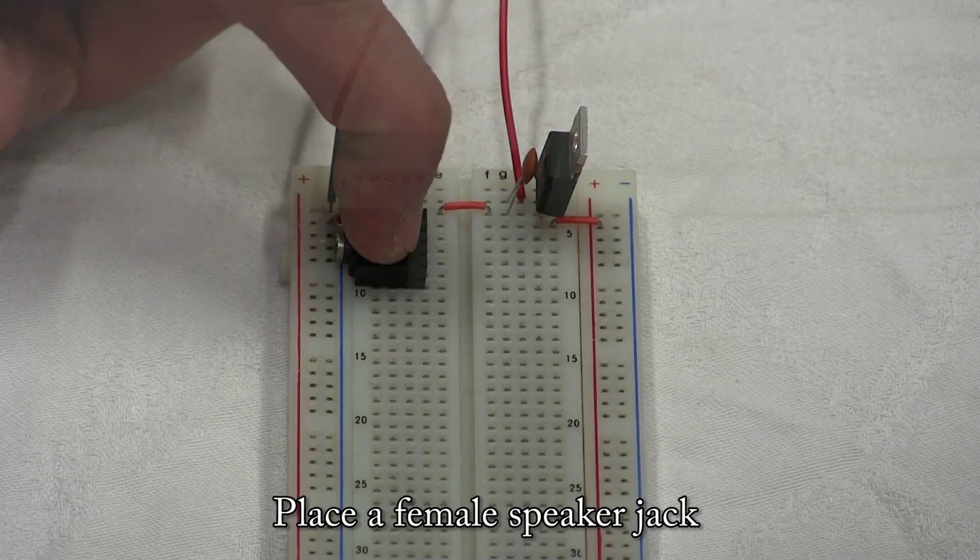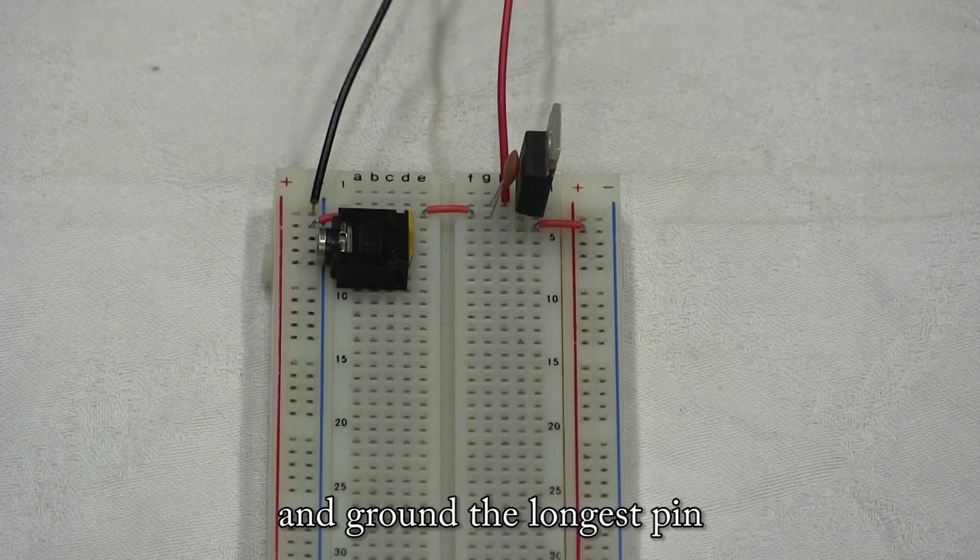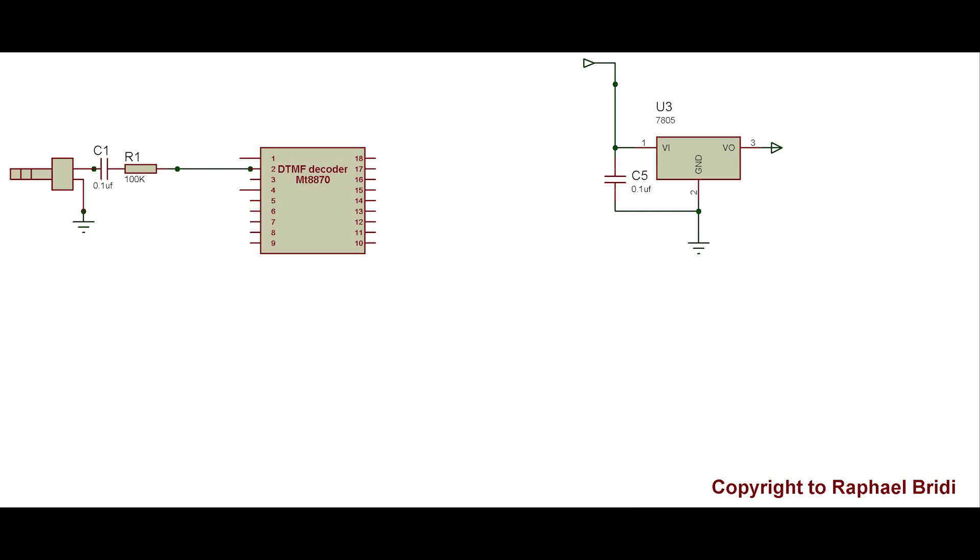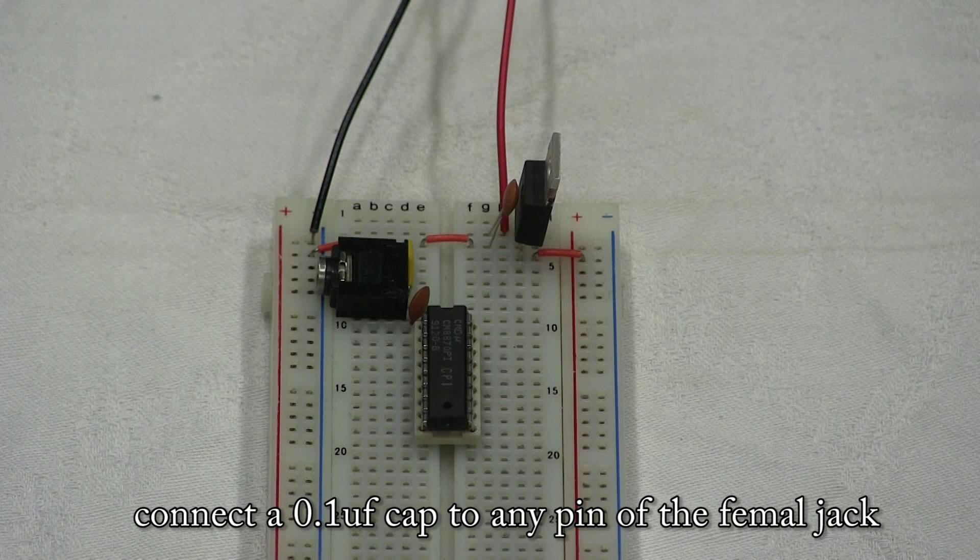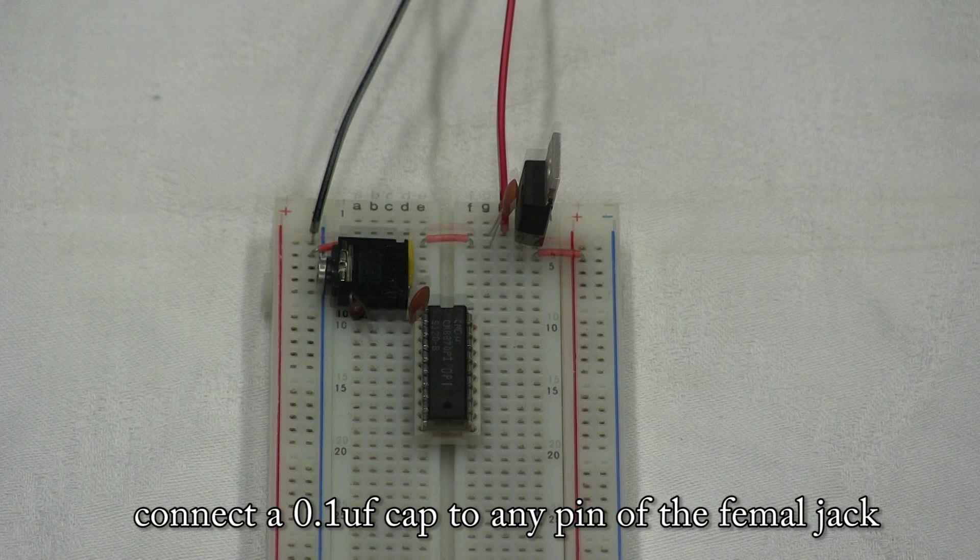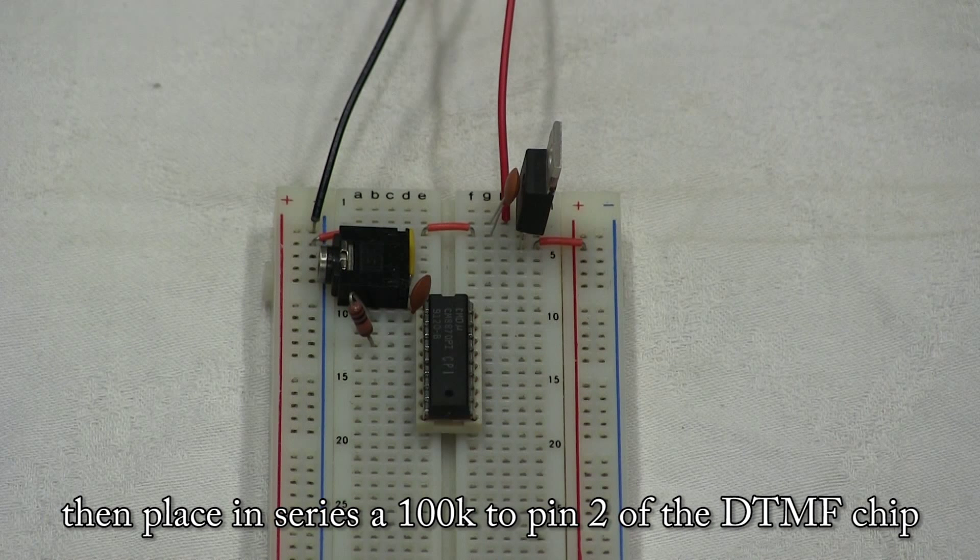Place a female speaker jack and ground the longest pin. Connect a 0.1uF capacitor to any pin of the female jack. Then place in series a 100k to pin 2 of the DTMF chip.